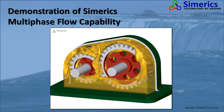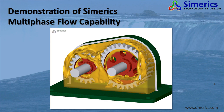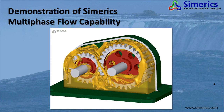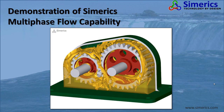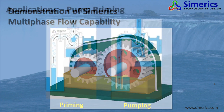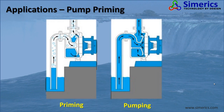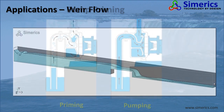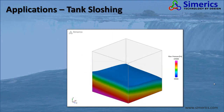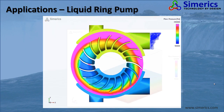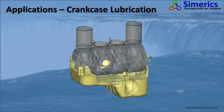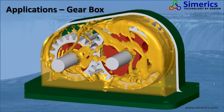I will list some typical applications for which the multi-phase module is useful: modeling gas-liquid interface movement and the motion of the interfaces between any number of immiscible components included in the simulation. Some typical applications are pump priming, flow over weirs, tank sloshing, liquid ring pumps, crankcase lubrication, and gearbox splashing.